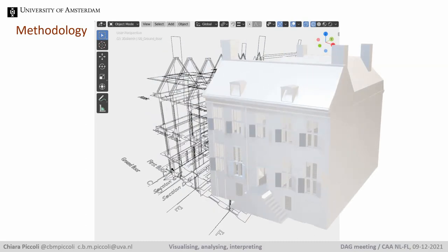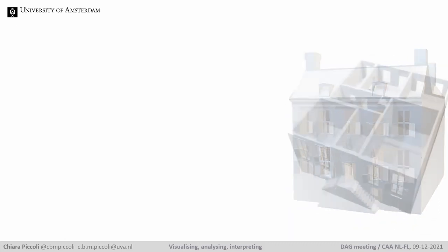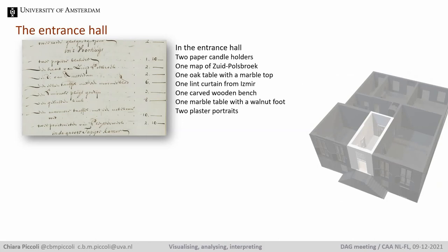Let's now see in more detail which objects and furniture we find in this room according to the inventory. As you can see, there were two paper candle holders, a map of South Polsbroek — part of the Graaf family possessions outside Amsterdam, with the Graaf holding the title of Lord of this estate — an oak table with a marble top, a striped curtain from Izmir, a carved wooden bench, a marble table with a walnut foot, and two portraits in plaster. What stands out when comparing this inventory with other contemporary inventories is the total absence of paintings in the entrance.